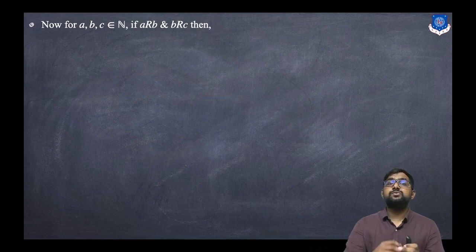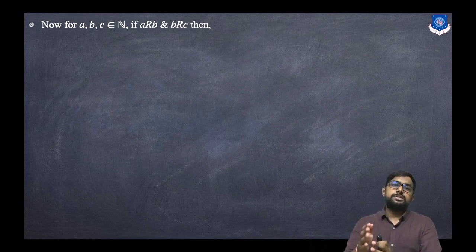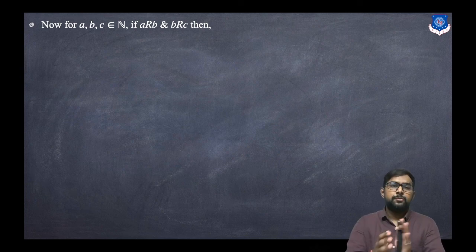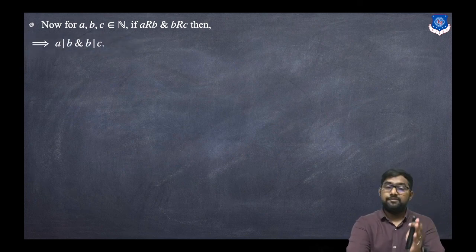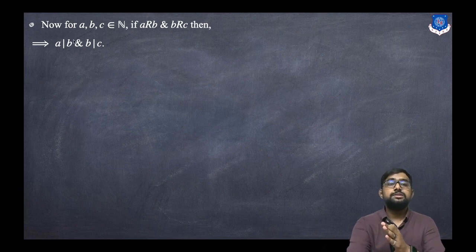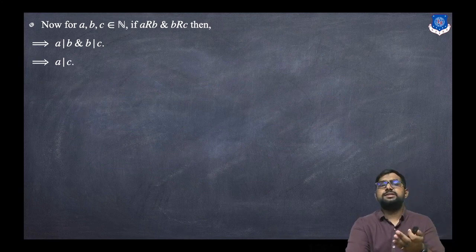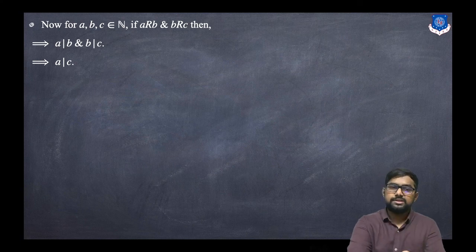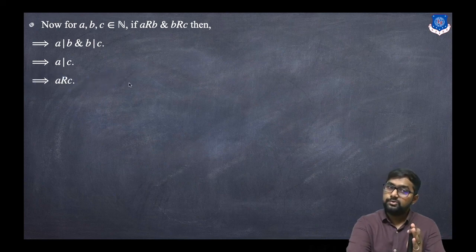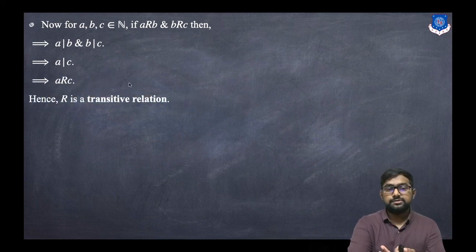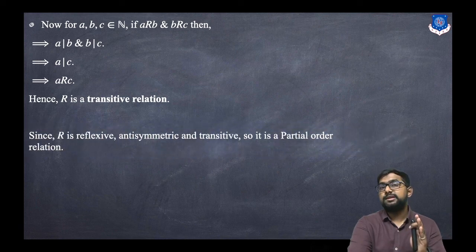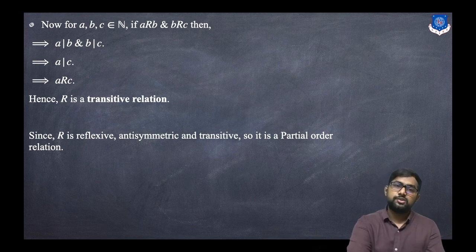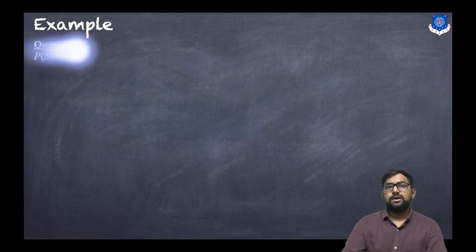For transitivity: let A, B, C belong to N. If A is related to B and B is related to C, then A divides B and B divides C, which means A divides C. For example, 2 divides 4, 4 divides 8, so 2 divides 8. Hence R is a transitive relation. Since it is reflexive, anti-symmetric, and transitive, it is a partial order relation.